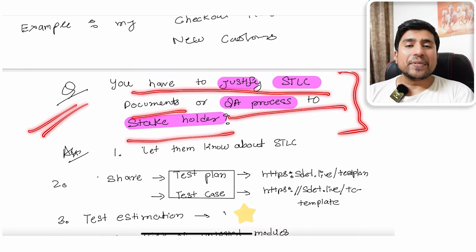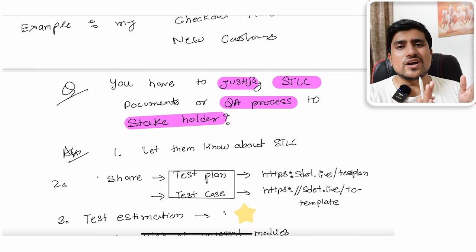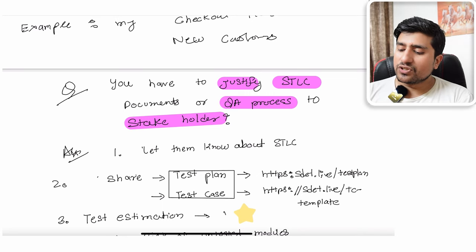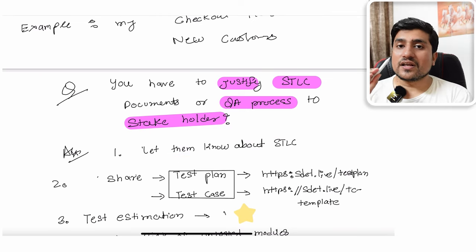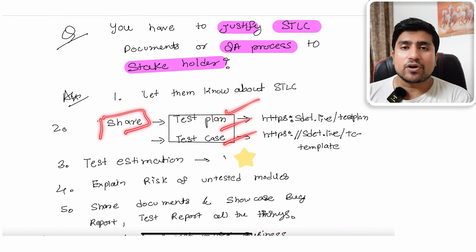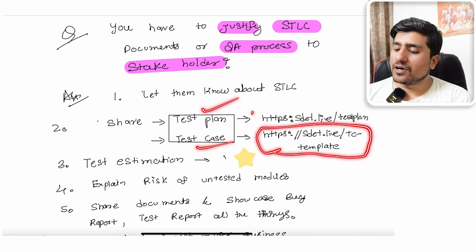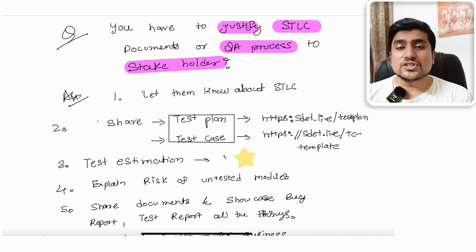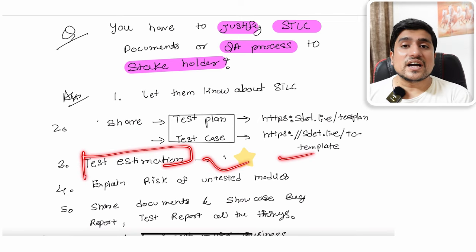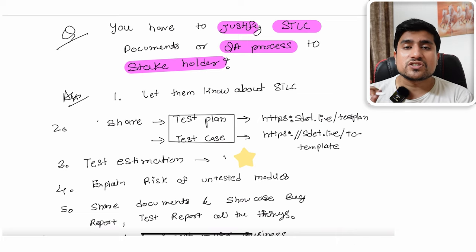The fifth question is: how do you justify the STLC documents and QA process to stakeholders? Stakeholders may tell you that documentation is not required or ask what your QA process is. Let them know about the STLC — Software Testing Life Cycle — and the steps to follow. Share important documents such as the test plan, test cases, test list template, RTM (Requirement Traceability Matrix), bug reports, test report estimations — all available in the description.